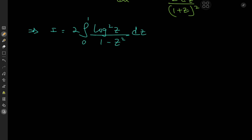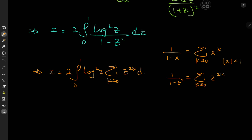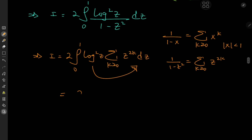Since the integral runs from 0 to 1, we invoke the geometric series expansion: 1/(1-x) = Σ x^k for |x| < 1, so 1/(1-z²) = Σ z^(2k). This gives i = 2 ∫₀¹ log²(z) · Σ_k z^(2k) dz. Since the log term is independent of k, we bring it inside the sum: 2 ∫₀¹ Σ_k z^(2k) log²(z) dz.